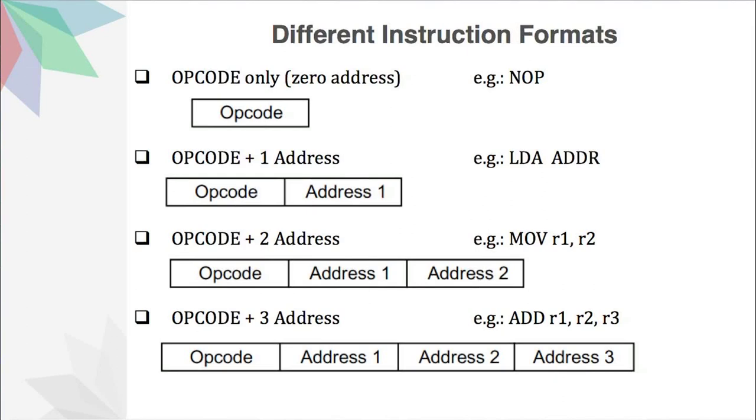Then we come to the last one — an opcode and three addresses. Here in the slide we have opcode, then address 1, address 2, and address 3. An example of this type would be ADD R1, R2, R3, where R1, R2, and R3 are registers. We want to add the contents of R2 and R3 and put that value into R1. So we can have instruction formats with only the opcode, opcode plus one address, opcode plus two addresses, or opcode plus three addresses.